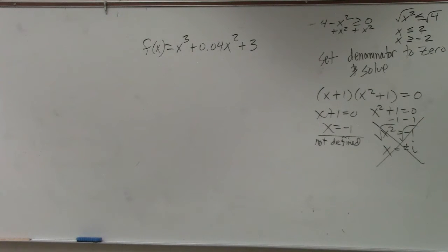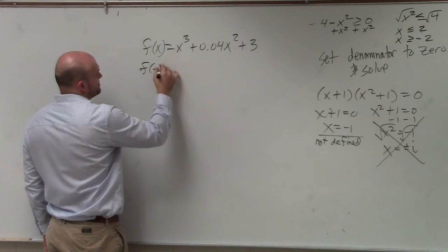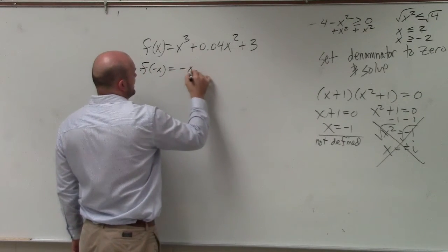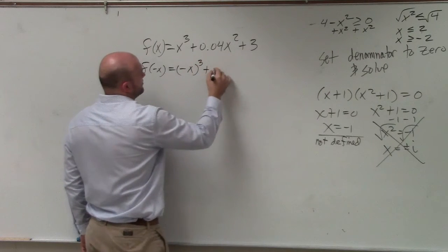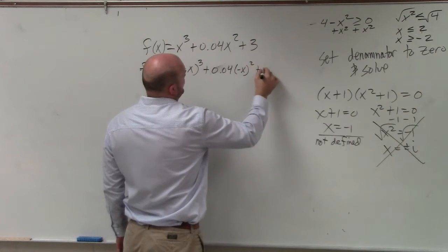This is something that you need to know how to do because you might have a quiz or a portion where you're not going to be able to use the calculator. So we just do f of negative x, and what we get is negative x cubed plus 0.04 times negative x squared plus 3.